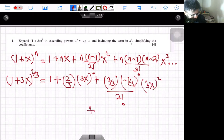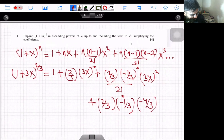Which means 2/3 multiply by -1/3 multiply by -4/3 divided by 3 factorial, multiply by (3x)³.